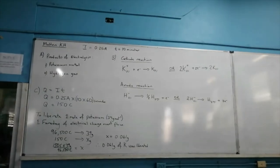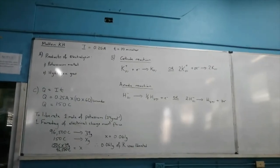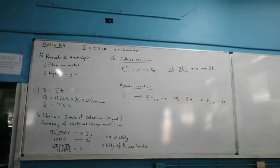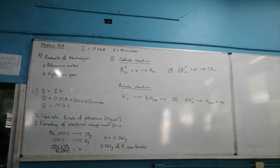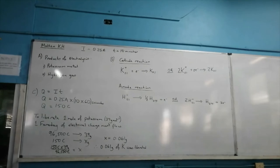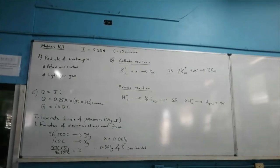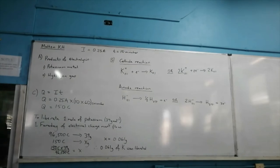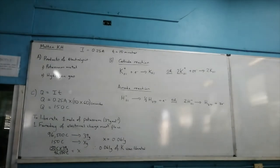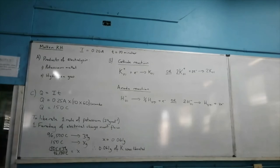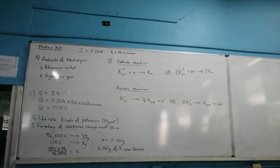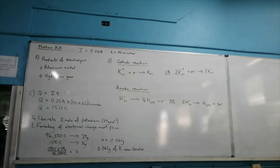Molten potassium hydride is being electrolyzed with a current of 0.25 amperes for 10 minutes. The products of electrolysis would be potassium metal and hydrogen gas. In the electrolyte, we have positively charged potassium ions and negatively charged hydride ions — nothing else, because the salt is molten.